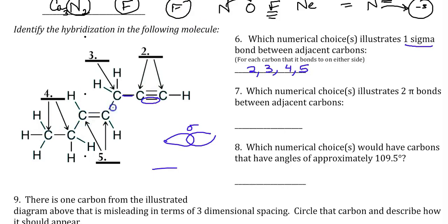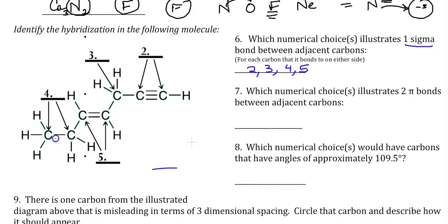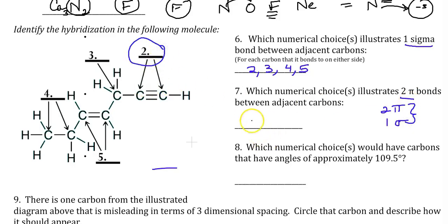The first bond must always be a sigma bond. The second bond must be a pi. This has one pi bond; this has two pi bonds. So the first bond must always be a sigma, the second bond is a pi — or as Sean Connery would say, not a sigma bond. Which numerical choice would have two pi bonds? If you have two pi bonds, that means you have one sigma and then two pi bonds — you have to have one overlapping — so we're looking for a triple bond. That's just choice two.